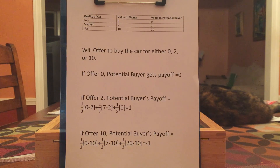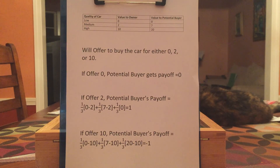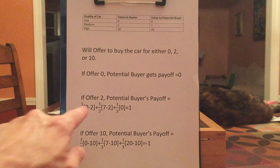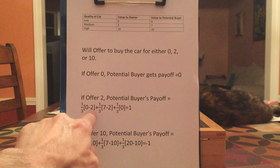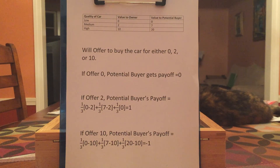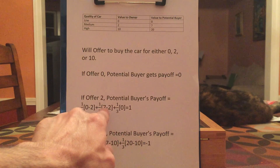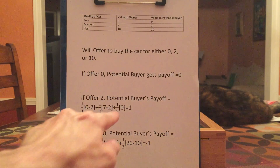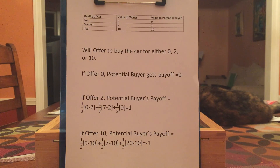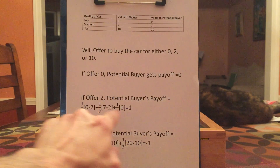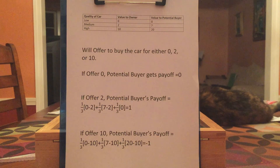If you offer zero, the offer will be accepted if the car is worthless, but then you've gotten something worthless for no money — your payoff is zero. What if you offer two? One third of the time, the car will be of low quality and the offer will be accepted, so your payoff will be negative two — you paid two for something worthless. But one third of the time the offer will be accepted and you've done well: you've gotten something worth $7 that cost you two. And the final third of the time the owner won't sell and the game ends, giving you a payoff of zero. Calculating this out, the expected payoff comes out to one. So if you offer to buy the car for two, your average payoff will be one — which is better than offering zero.